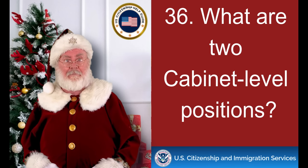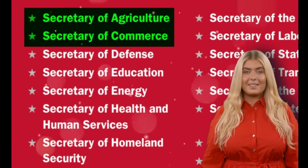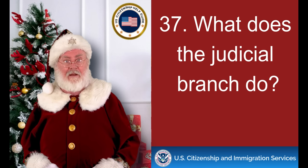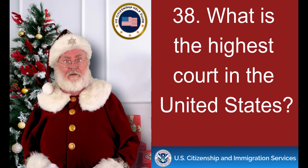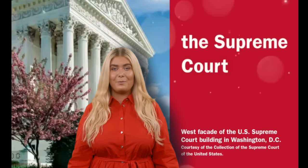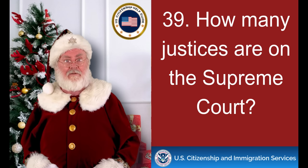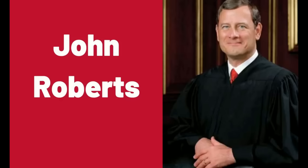What are two cabinet-level positions? Secretary of Agriculture, Secretary of Commerce. What does the judicial branch do? Reviews laws. What is the highest court in the United States? The Supreme Court. How many justices are on the Supreme Court? Nine. Who is the chief justice of the United States now? John Roberts.